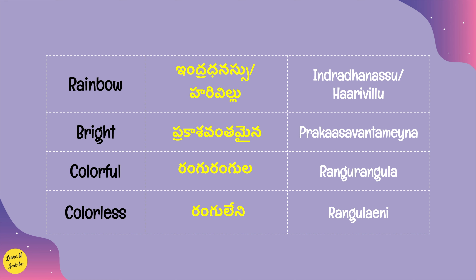Now let's see a few words associated with color. Rainbow in Telugu can be called by two names — either Indra Dhanassu or Hari Villu. Next, Bright is Rakaasa Vantha Maina. Color means Rangu, colors means Rangulu, colorful is Rangurangulu or Rangurangula, and colorless is Ranguleni. These are a few words associated with color.